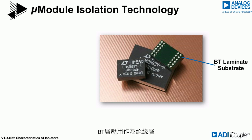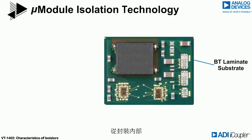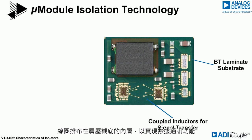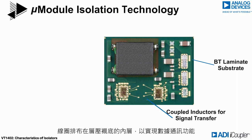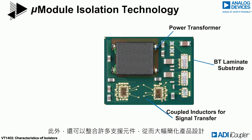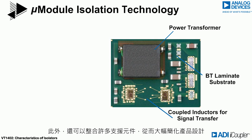The BT laminate serves as the insulation. If we look inside the package, we can see the individual elements that form the data and power isolation. Coils are patterned into the inner layers of the laminate to provide the data communication functionality. A power transformer is also integrated into the packaging, which provides high power capability and improved power transfer efficiency. Many support components can be integrated, making the products very easy to design with.